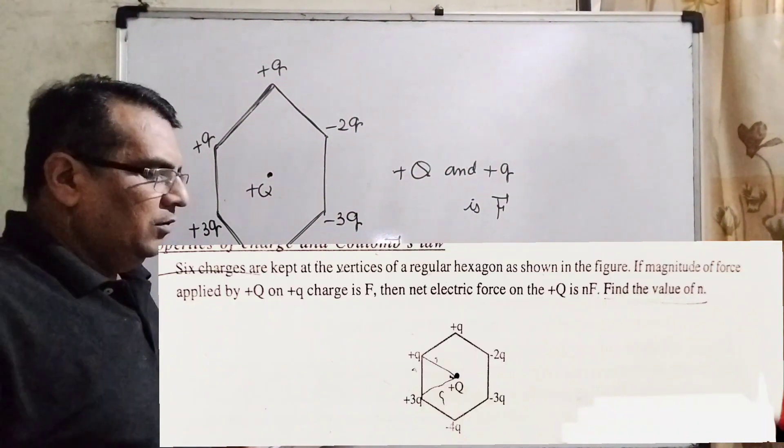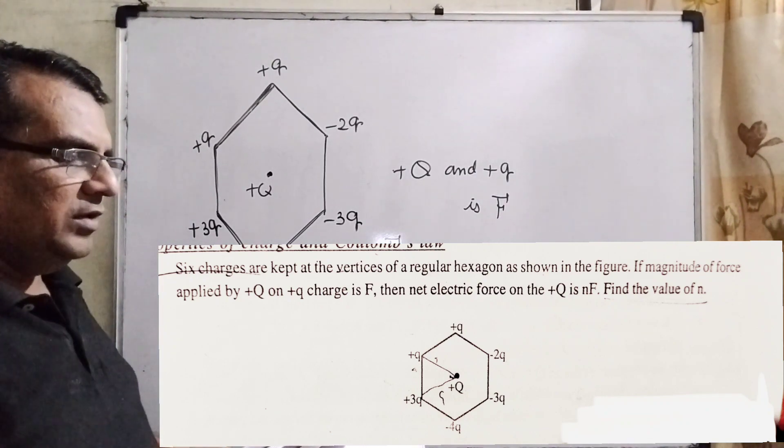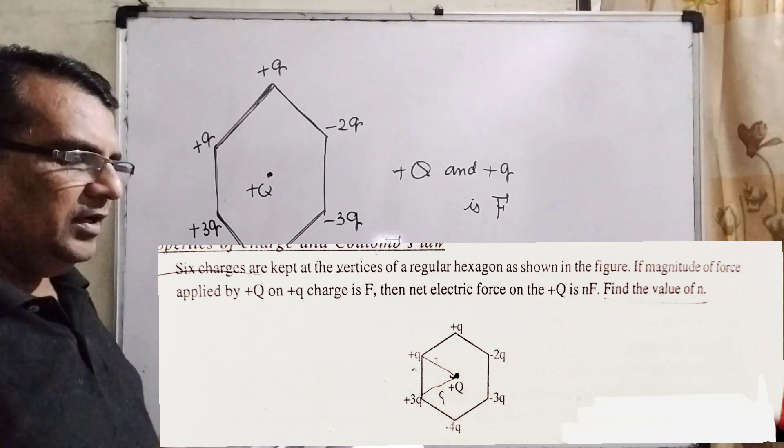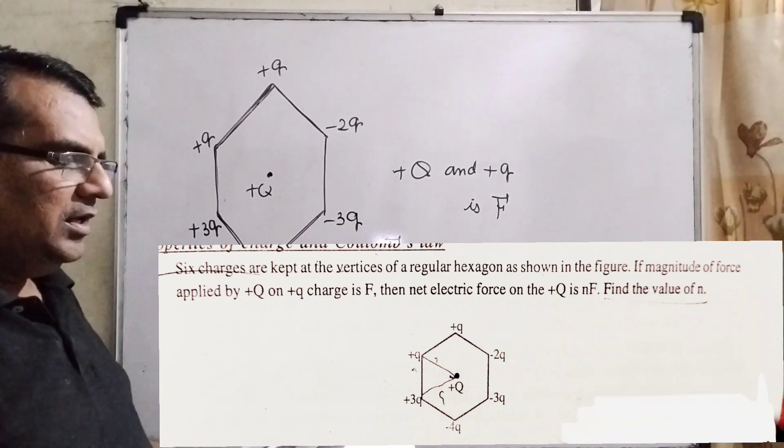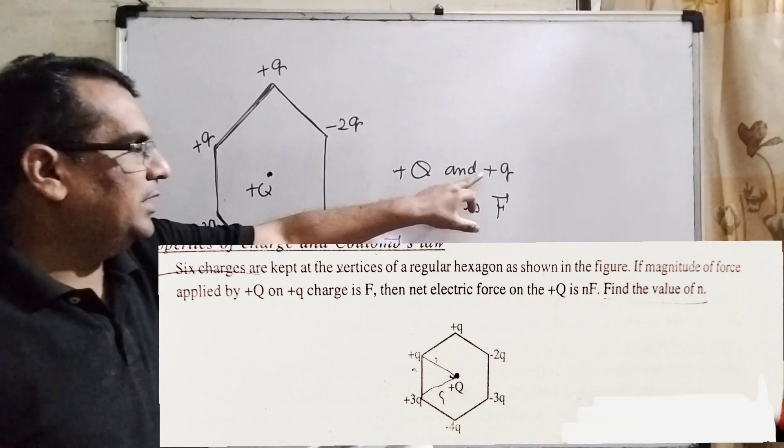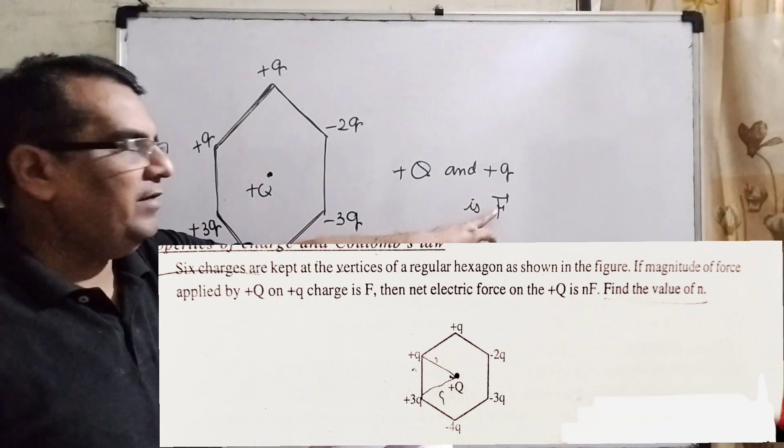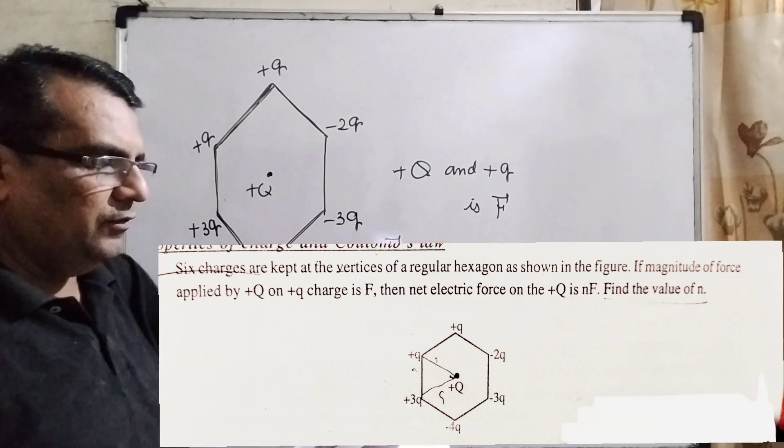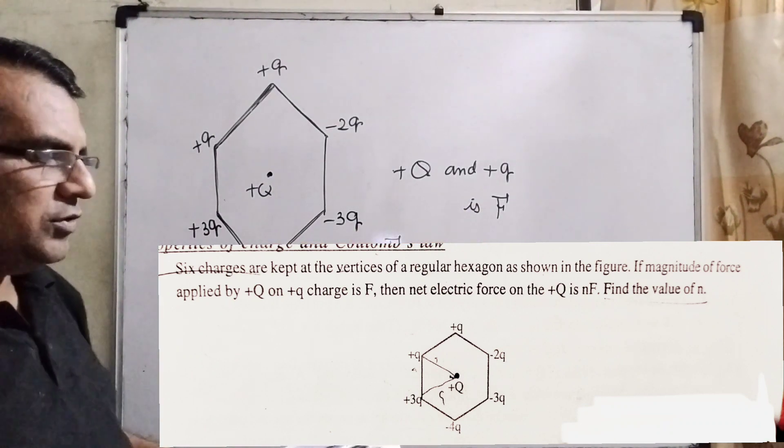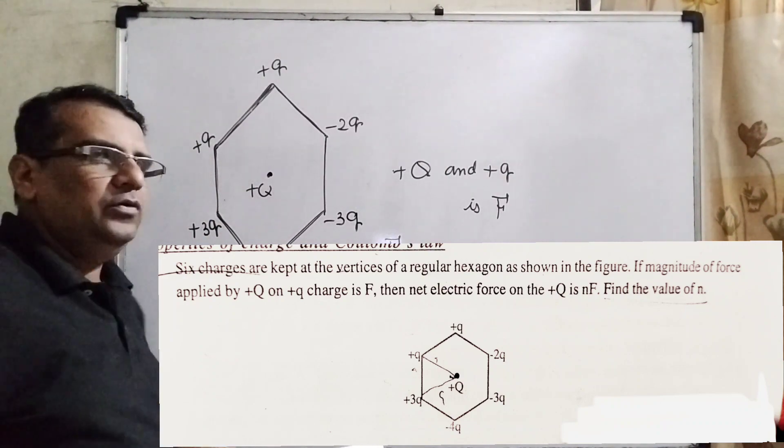Let's see what the question says. Six charges are kept at the vertices of a regular hexagon. According to the figure, if magnitude of force applied by plus capital Q on plus small q charges is capital F, then net force on the center is nF. Then find out the value of n.